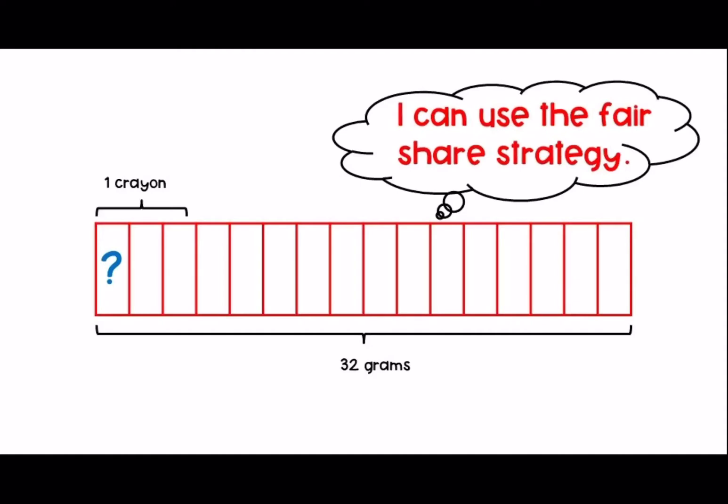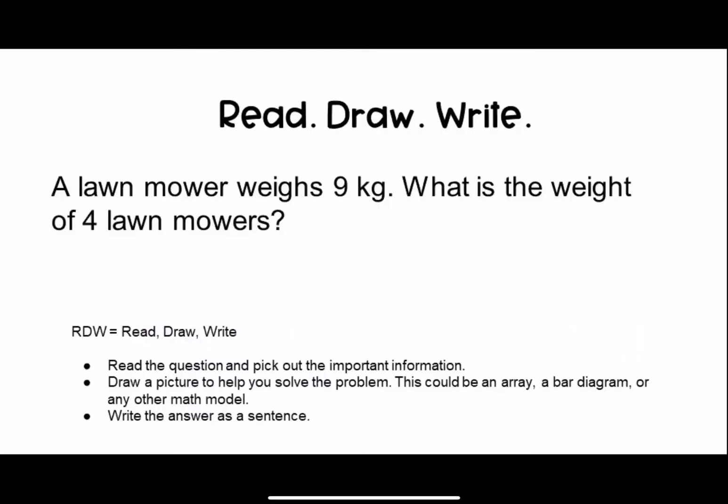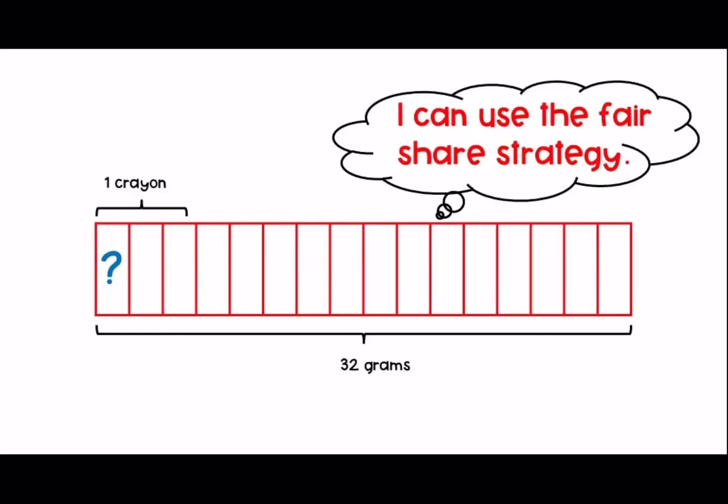Notice there are 16 red boxes on the tape diagram. Each red box is one crayon. I need to share the 32 grams in all amongst 16 crayons to find out how much one crayon weighs. The answer is 2. We're going to share 2 grams for each crayon.